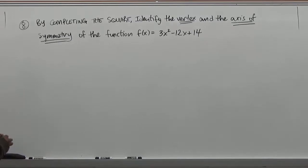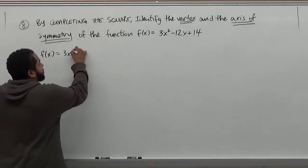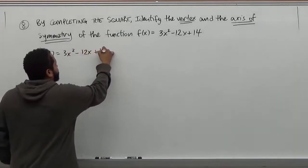So in this case, what we're going to have to do is use the completing the square method. To do that, we take our function, which is f(x) = 3x² - 12x + 14.